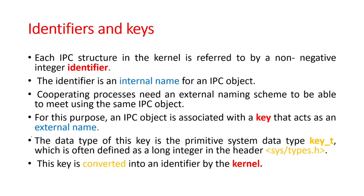First, let us see the concept of identifiers and keys. Each IPC structure — that is, message queues, semaphores, and shared memory — is referred to in the kernel by a non-negative integer called an identifier. Each of these structures is known by this integer value. The identifier is the internal name for an IPC object and is used for the reference of the kernel.